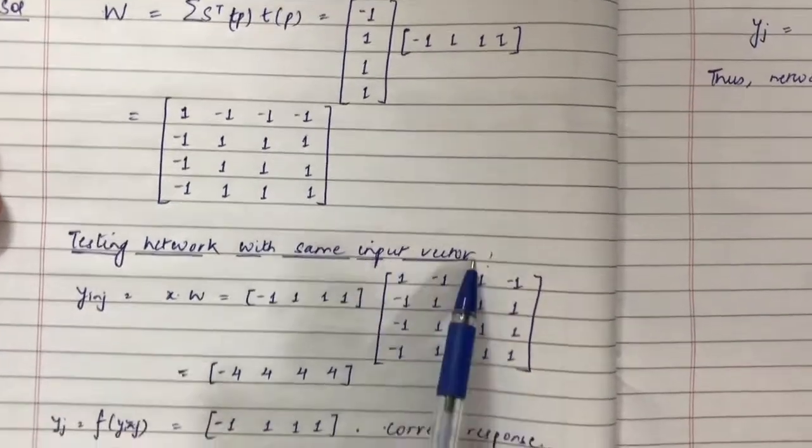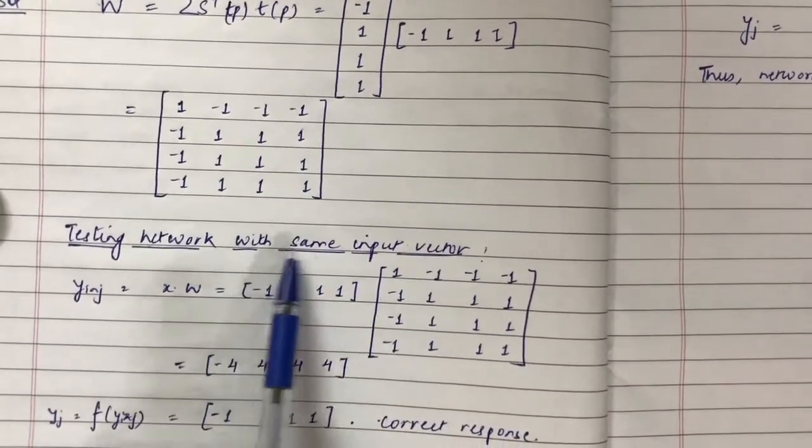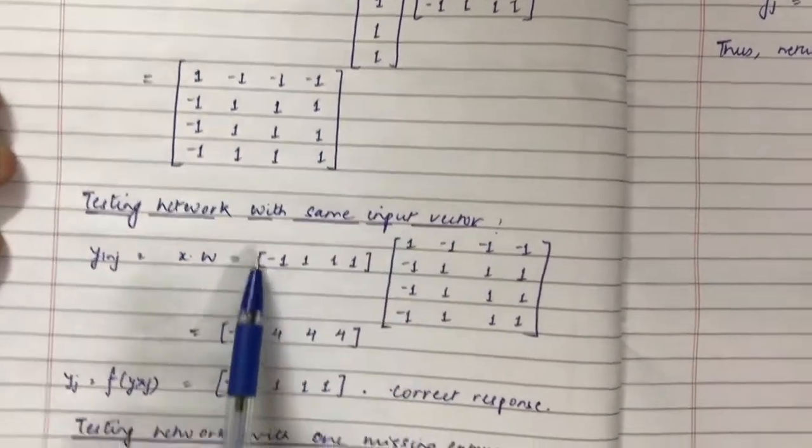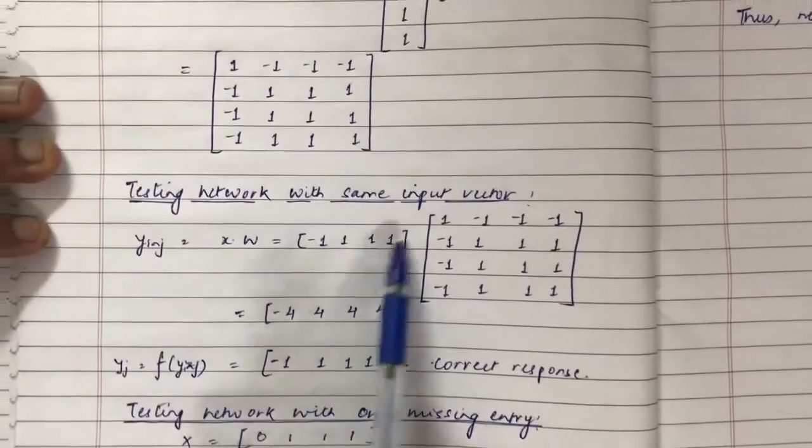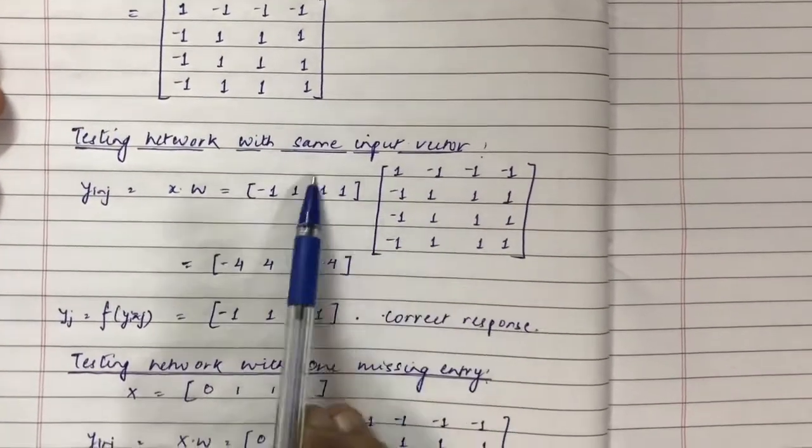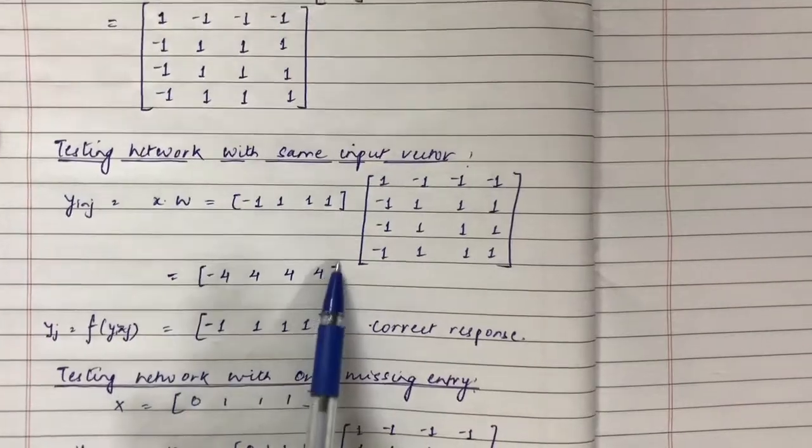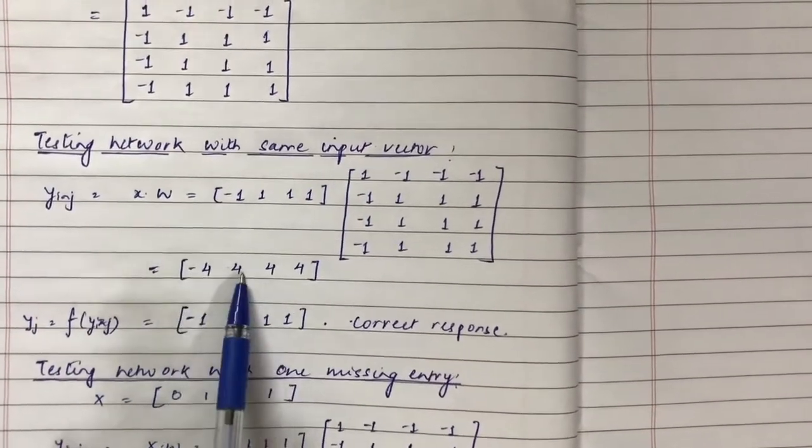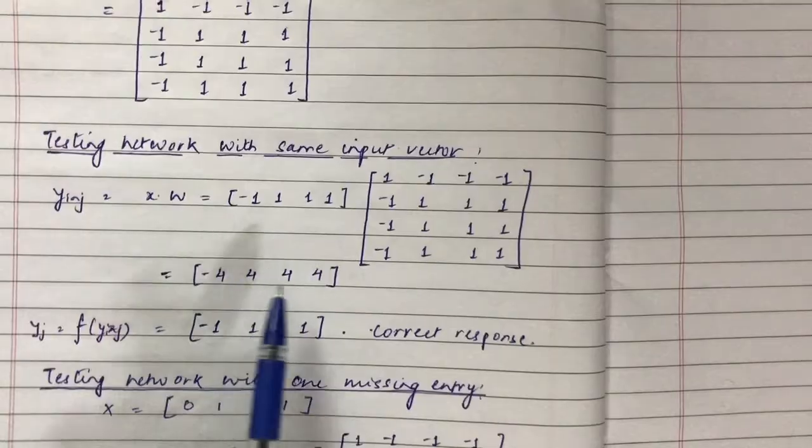Now, testing the network with the same input vector. For performing the testing, we need to multiply this given vector with the weight matrix. You will get a 1x4 matrix like [-4, 4, 4, 4], and after you apply the activation function,